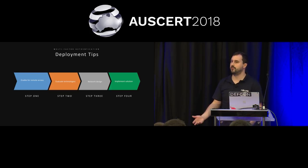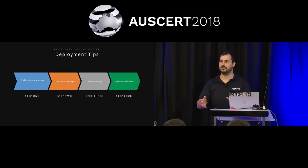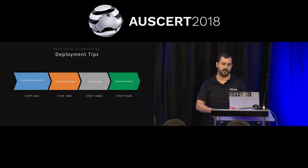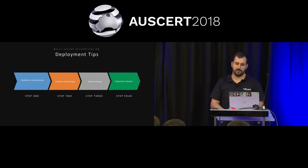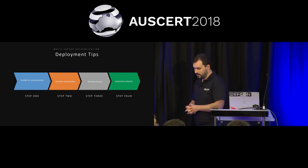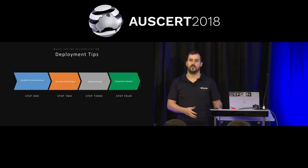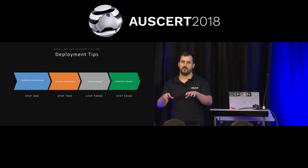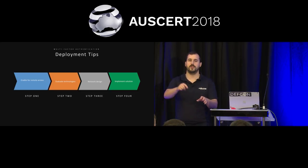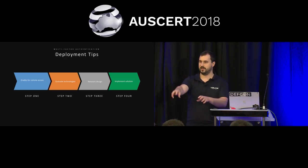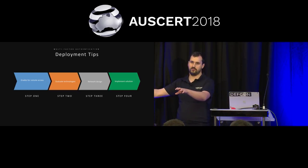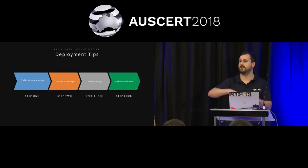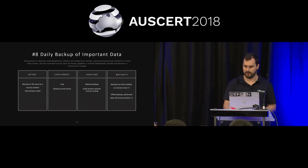Deployment tips. Step one: enable multi-factor for your remote access solutions — it's typically very easily natively integrated into these platforms. Step two: look at technologies from vendors to do your internal systems. Step three: network design — rather than installing a multi-factor client on every single server, design your network with jump hosts or choke points, so to get to the server zone you must go through a particular endpoint first. This makes multi-factor implementation significantly easier. Step four: implement that solution.